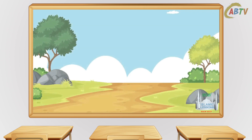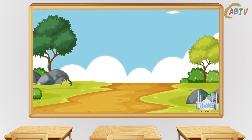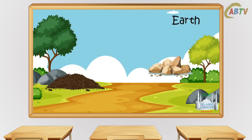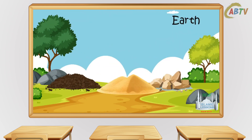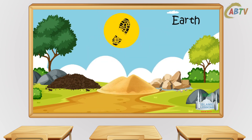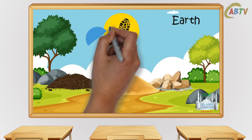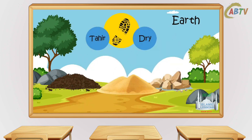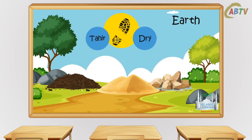Apart from water, there are other ways of purifying something that has become mutanajjis. Earth is one of those purifiers. Earth means soil, sand, stone, brick or something similar. Earth can purify the bottom of your shoes provided the floor is tahir and dry.